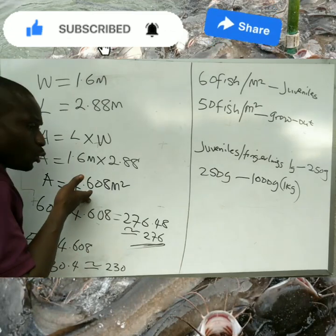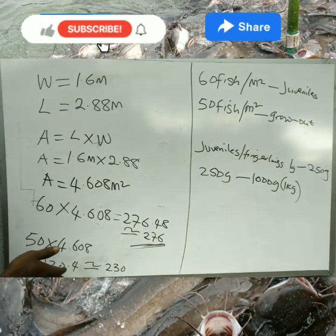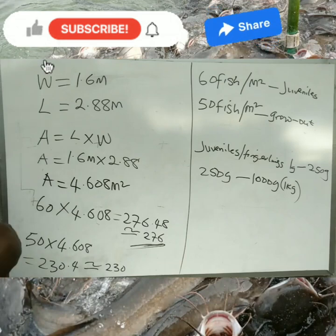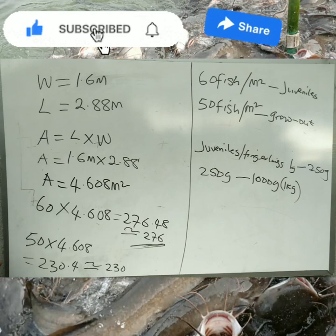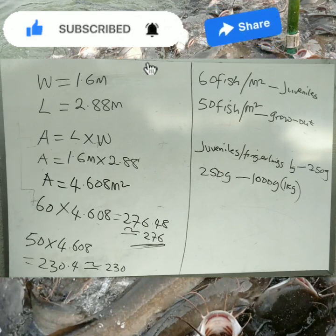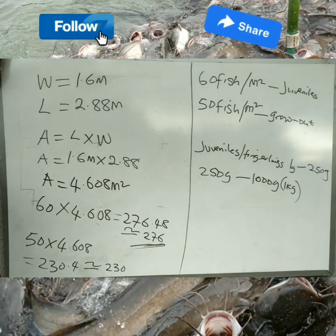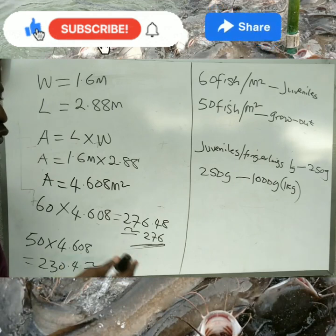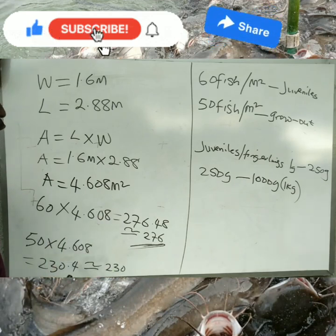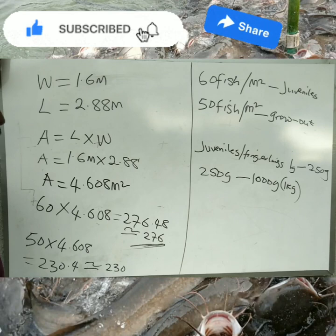So as a catfish farmer — or a beginner in catfish farming — the basic principle is to know the carrying capacity of your pond. There are other things you also need to know: disinfecting and cleaning the pond, sourcing good fingerlings or juveniles, and after stocking, how to manage them — including the type of feed you use. These are all very important basic farm operations.